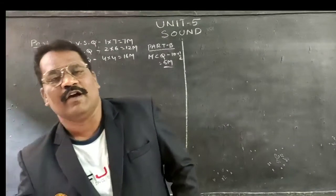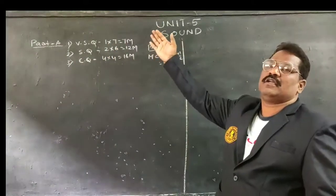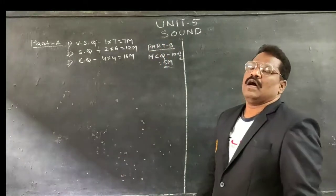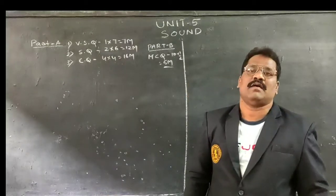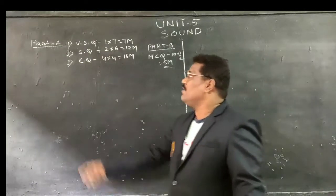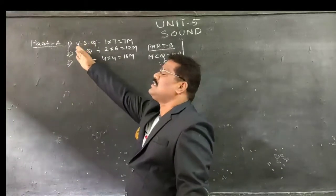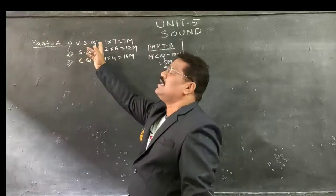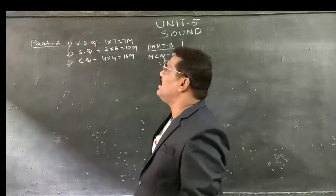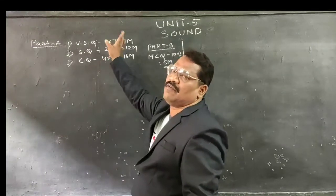As we have completed our chapter, we are going to discuss the total examination revision. The examination will follow the same pattern as the annual examination, with the first session being Part A and the second session Part B. In Part A, the first section is very short answers, in which 7 short answers will be there and you have to write all 7.